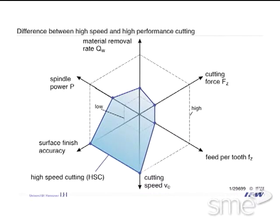However, when applying only these low feed rates and low depth of cut, we can only machine with low material removal. The aim of the high-speed cutting operation is the improvement of surface quality and form accuracy.